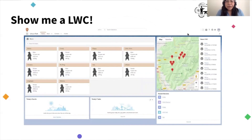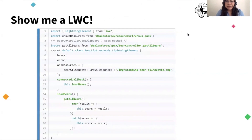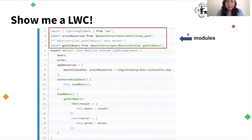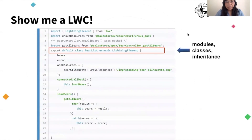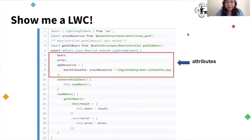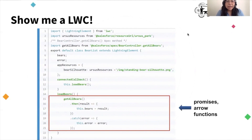Now we are going to see a Lightning Web Component. I took this one from a Trailhead build example. Here is the JavaScript code, and we can see several ES6 features. At the top we are importing modules, both from the Salesforce platform and from Apex controllers I have defined. Then we have modules, classes, and inheritance: I am naming a class BearList that extends Lightning Element, and exporting this class as the only export in the file. I declare several attributes, and here I'm using a promise because getAllBears goes to the backend. When everything goes right, I assign the result to the bearList variable, and when I get an error, I assign it to the error variable in my local class.